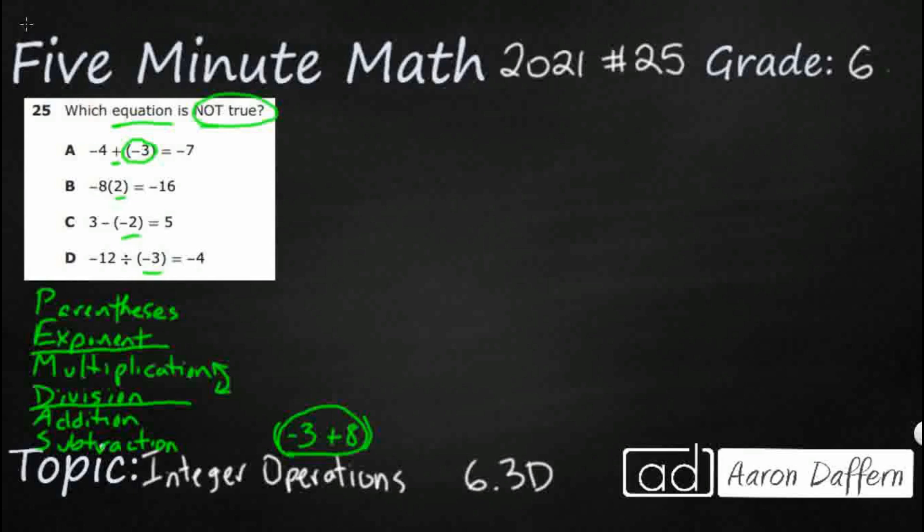And in some cases, they're actually representing multiplication. So let's look at this first one. A, negative 4 plus negative 3 equals negative 7. Well, this plus negative right here, we need to know that if you have a plus and a minus, then that's always going to result in a negative. So if you have two different signs, it's always going to result in a negative here.